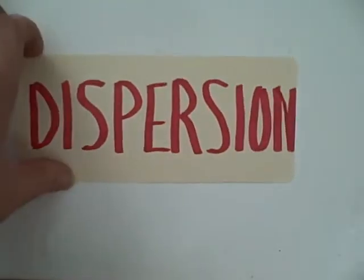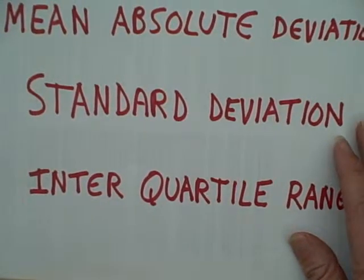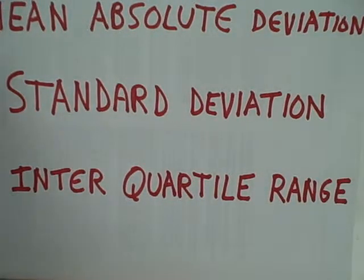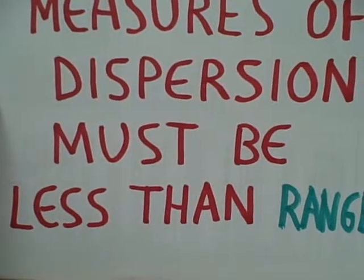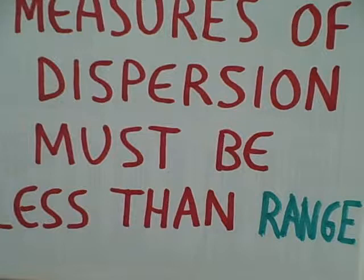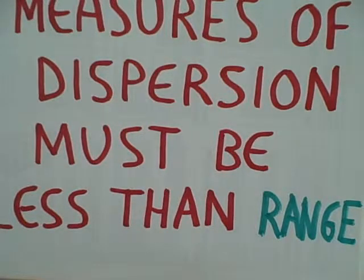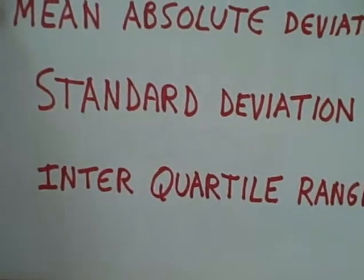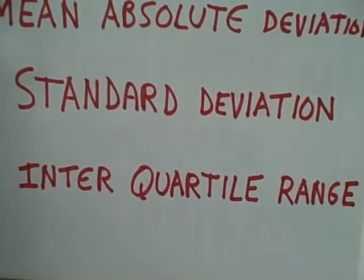There is no way you can have a measure of central tendency that lies outside of the range of scores you are inputting into your data. The other area where this will help you with error checking is with your measures of dispersion. Here we're talking about things such as mean absolute deviation, the standard deviation, and the interquartile range. These measures of dispersion must be less than the range — all of these measures of dispersion are less than your greatest measure of dispersion, your maximum score compared to your minimum score.